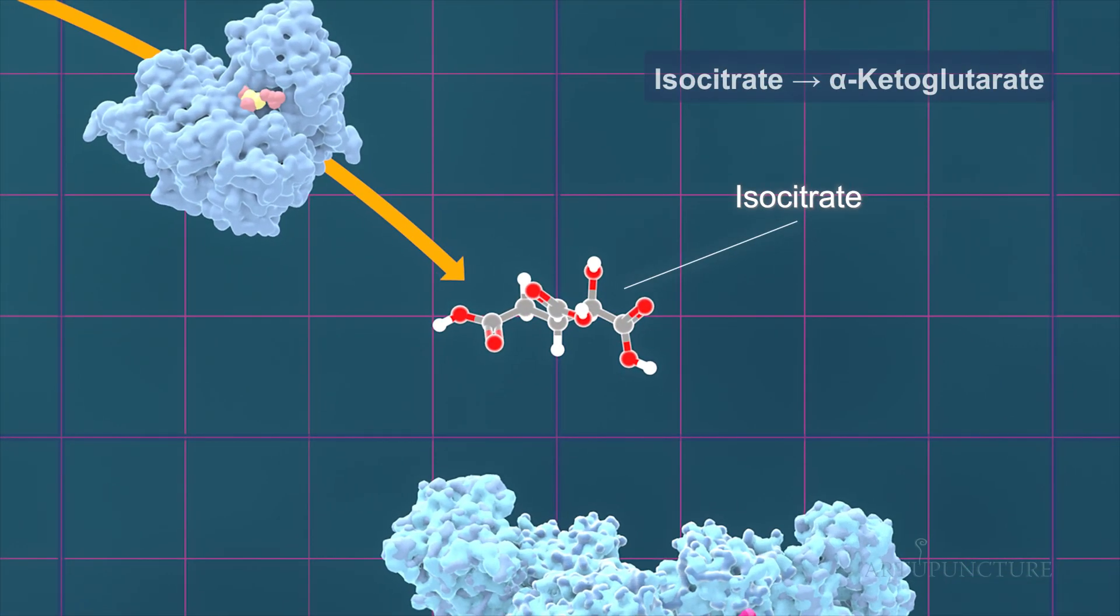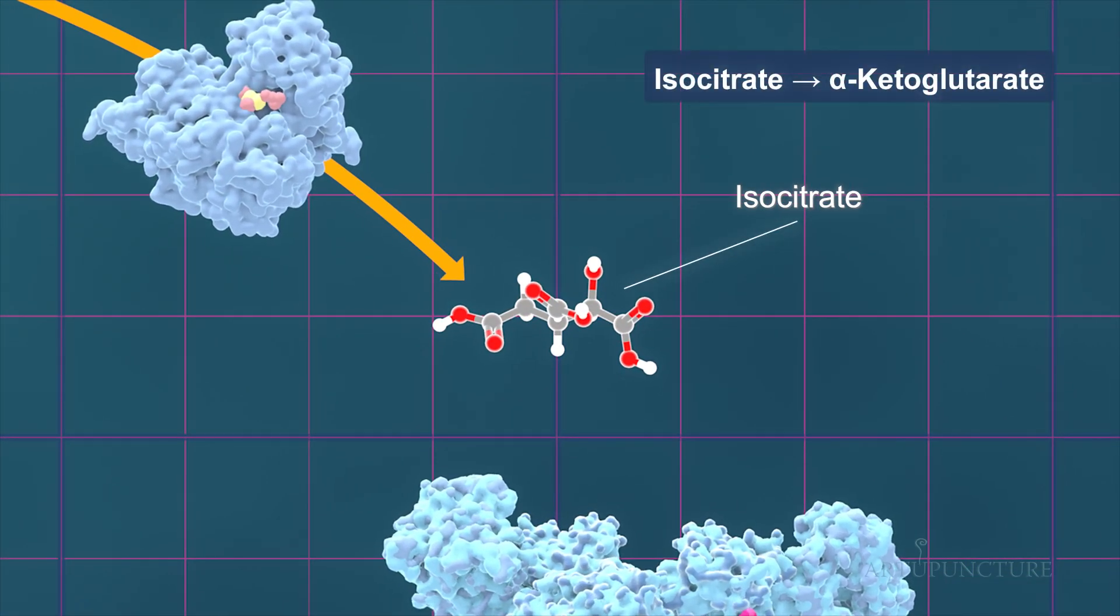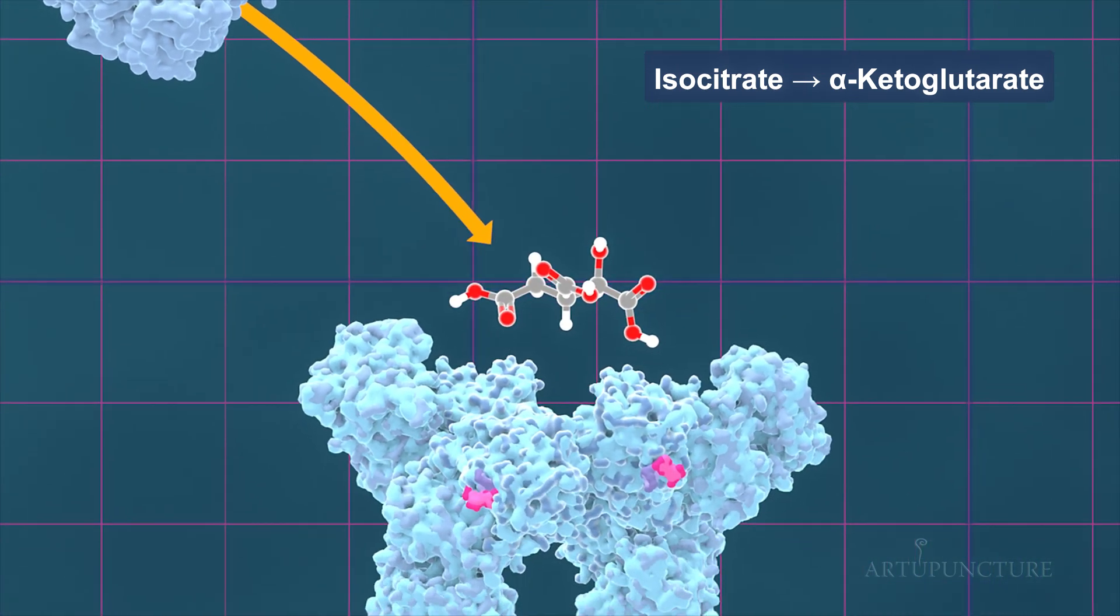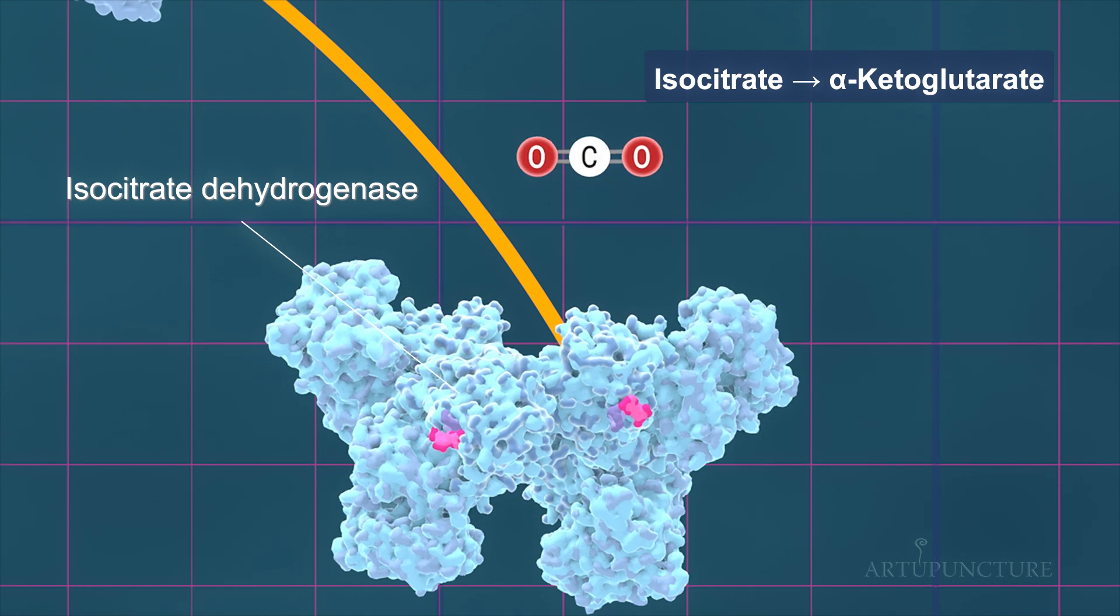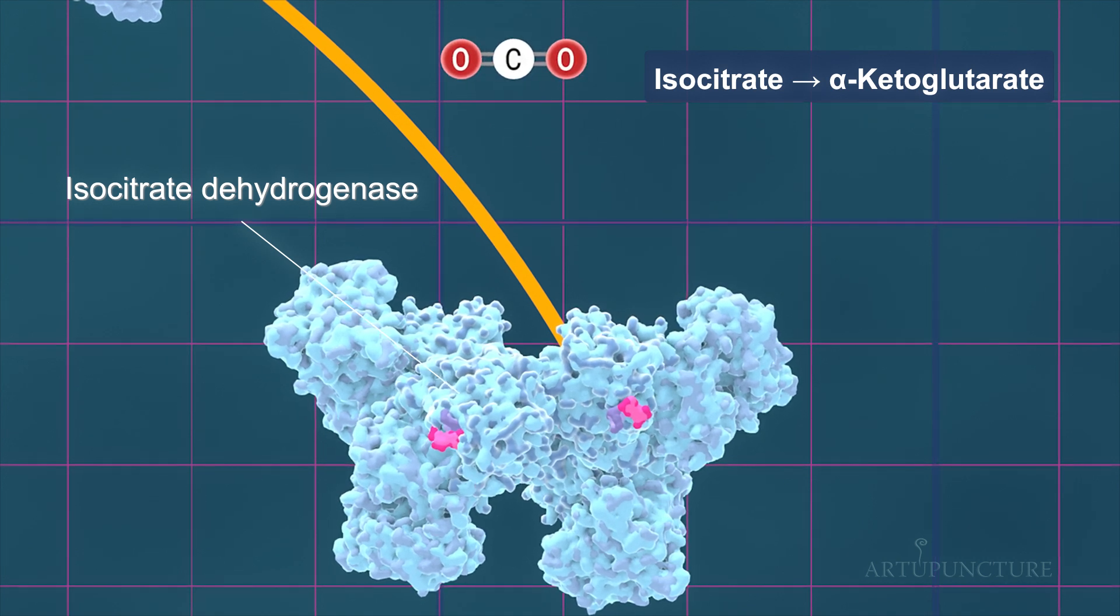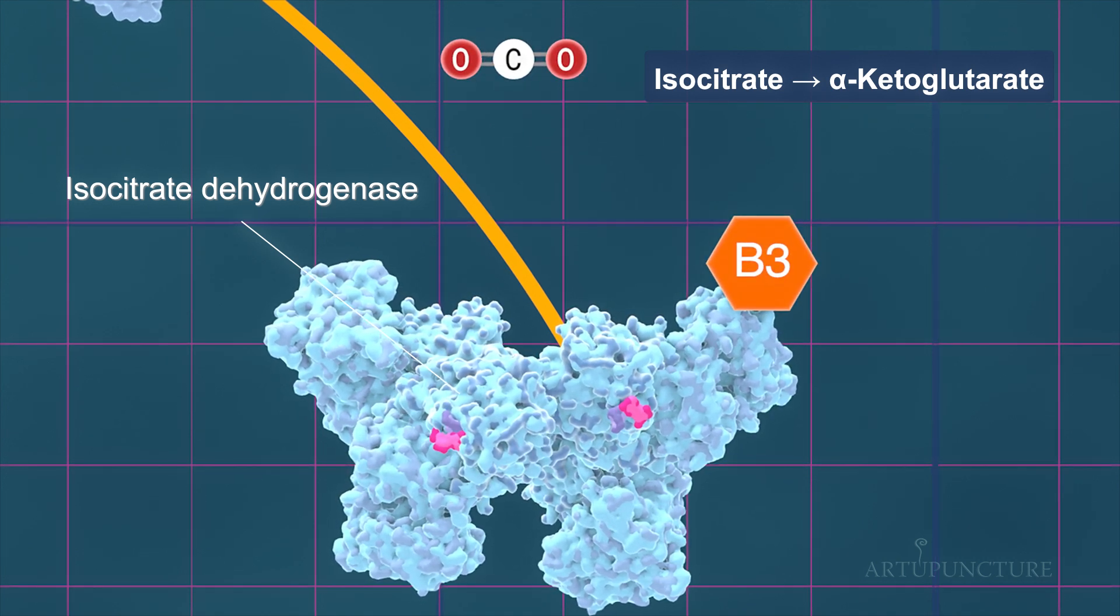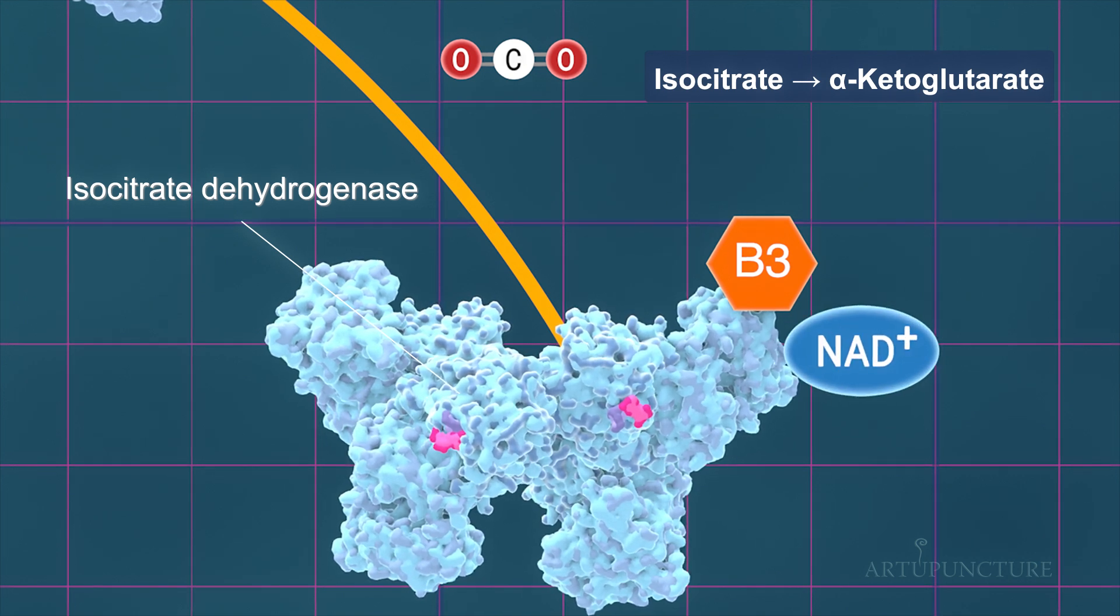Isocitrate is converted to alpha-ketoglutarate by the enzyme isocitrate dehydrogenase. During this reaction, carbon dioxide is released. Vitamin B3, niacin, acts as a cofactor to form NAD, which is then reduced to NADH.